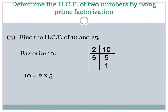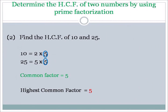Find the HCF of 10 and 25 by prime factorization — same numbers, so we know the answer. Factorize 10: 2 × 5. Factorize 25 using prime factorization: 5 × 5, or 5 squared in index form. The only common factor is 5. So the HCF using prime factorization is also 5.